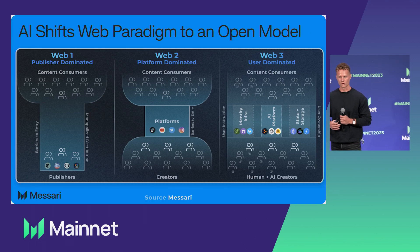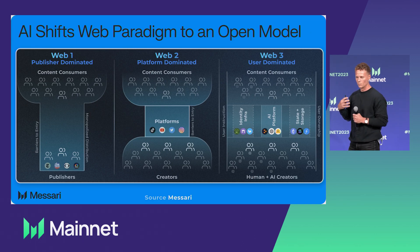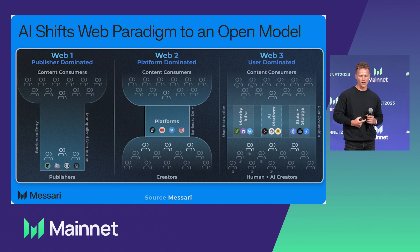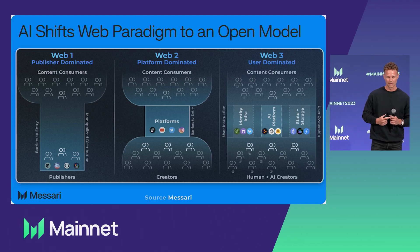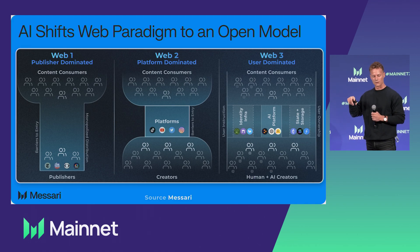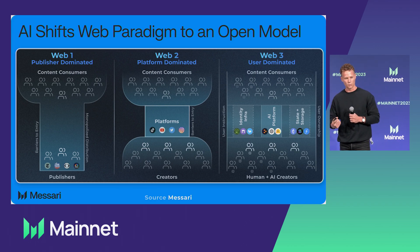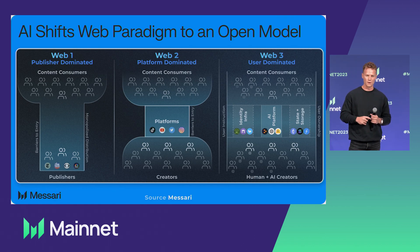Web one is what we traditionally think of as publisher-dominated — they controlled distribution, that was the key ingredient. Then the internet came around and platforms made distribution effectively free, zero marginal cost to publish a new blog. But now those platforms are competing by closing down data — locked databases, API access. That's where their moats are. Take the Twitter API, for example — that's been locked down over the last couple of months.